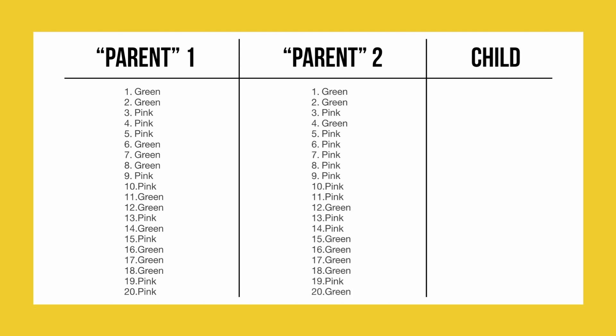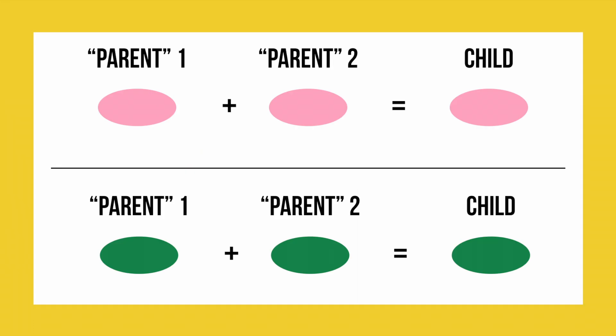Now that we have our data, how do we figure out what to put in the child column? In our example, we use both pink and green jellybeans. If we drew a pink jellybean from parent 1 and parent 2, the child will be a pink jellybean, and the same goes for the green jellybeans.